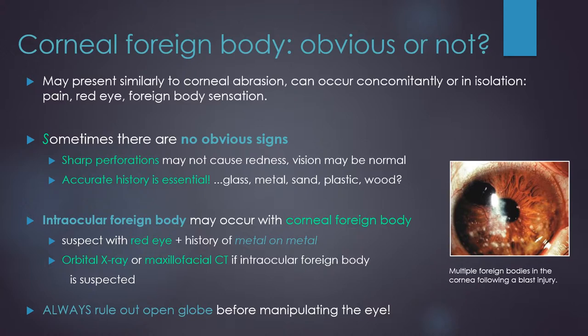Corneal foreign body was the second item on the differential for this case. These present similarly to corneal abrasions and occur via the same mechanisms. Sometimes there are no obvious signs that a foreign body has been sustained, so it's important to obtain an accurate history. Sharp perforations might not cause redness and the patient's vision might be normal. Importantly, corneal foreign bodies can be indicators of intraocular foreign bodies. You should suspect an intraocular foreign body if a patient presents with a red eye and a history of metal on metal, such as grinding or hammering. This patient may need imaging with an orbital x-ray or maxillofacial CT to further evaluate.